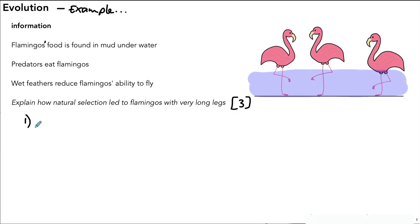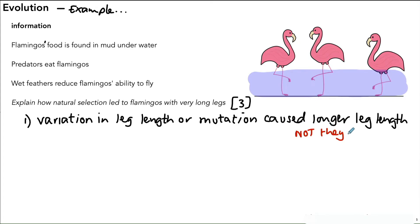The first point to make is linked to the first point we had on the previous slide, and that is that there is variation in the leg length of the different flamingos. So we have variation in leg length. We could also say however that a mutation occurred which resulted in a longer leg length for an individual. It's very important that when we talk about the mutation we don't say that the flamingos mutated or the legs mutated because that makes it sound like it was done on purpose. Mutations don't happen on purpose. We say a mutation occurred.